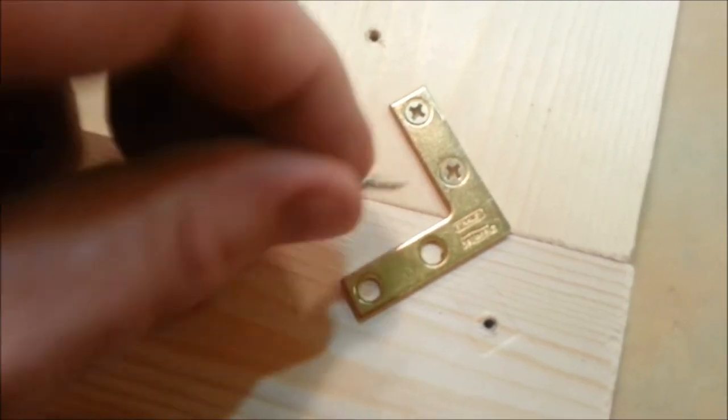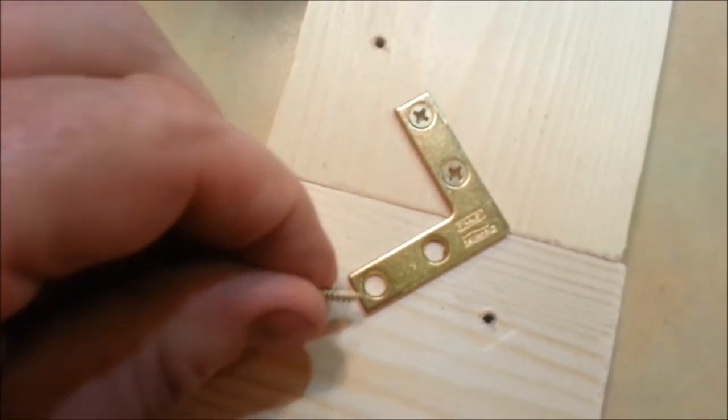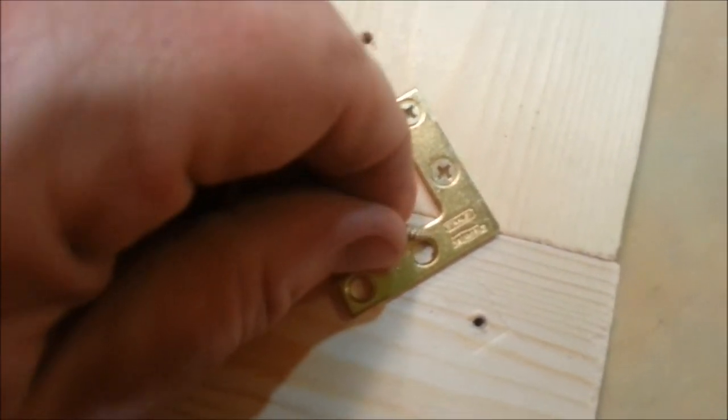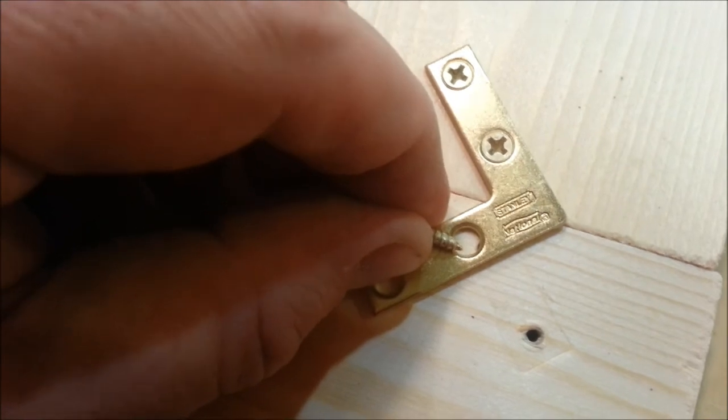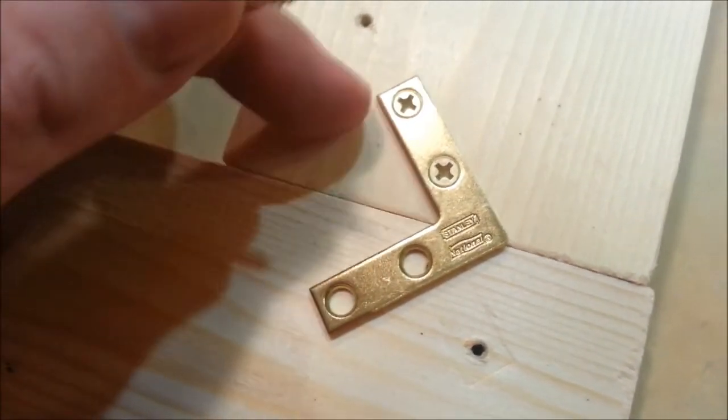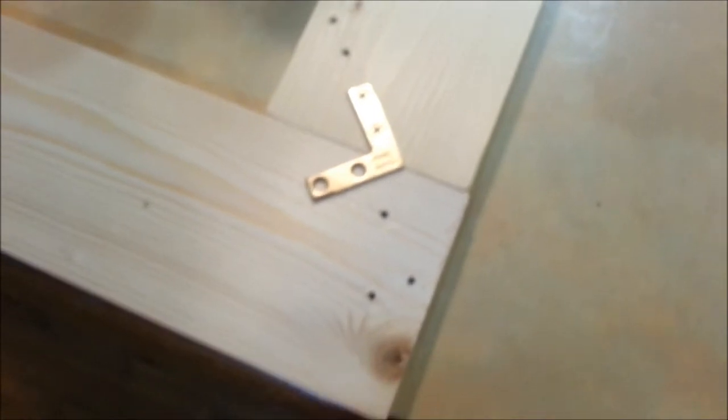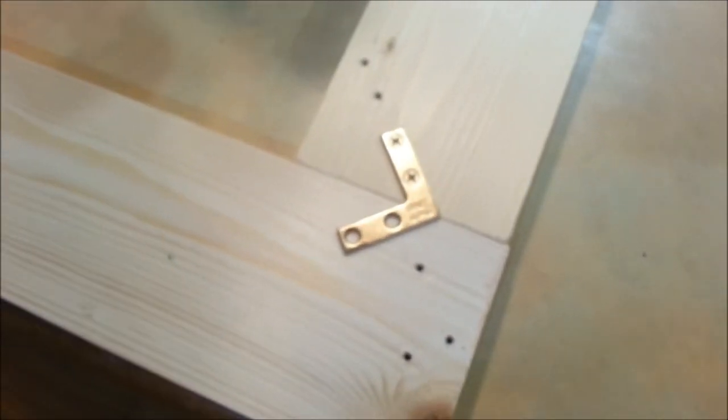Once they're pulled together, this one you go ahead and center it. With this one here, instead of putting it here in the middle, you want to move it back here to the edge and go ahead and pull these two pieces of wood together. That helps it just stay together a little better, makes it look a little nicer without that gap.